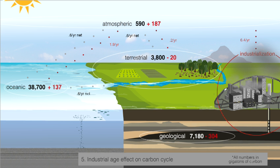The large red numbers indicate the total changes to the carbon reservoirs since 1800. The red dots and the smaller red numbers beside them indicate the annual impact of industrialization on the carbon fluxes.